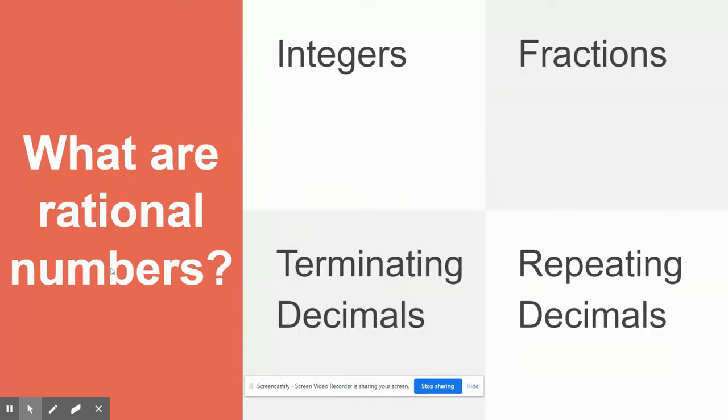So what are rational numbers? Any fraction, because rational numbers can be expressed as fractions. Any integer, because it can always have a denominator of one, as well as terminating decimals and repeating decimals.